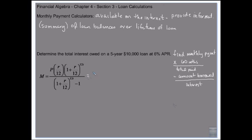So we're going to put $10,000 here. 1 plus 0.06 divided by 12, 1 plus 0.06 divided by 12, 12 times 5, minus 1.